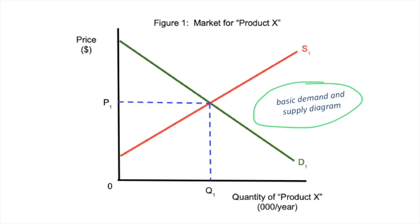So what is on this diagram? Well, it's pretty straightforward, right? Price, dollar sign, P1, zero, Q1, quantity of product X, whatever the product might be, 1000 in the unit, a year, D1, S1, figure one, market for product X. Now, we're going to look at price elasticity of demand, and what we're going to focus on is actually just the demand curve.